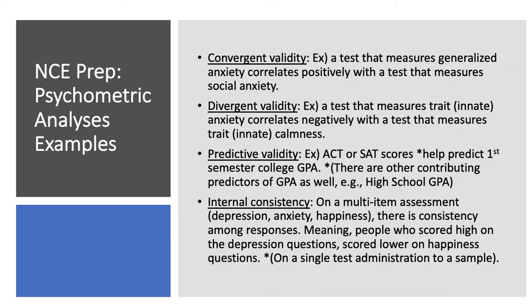Internal consistency is a reliability indicator, and what that's looking at is on a multi-item assessment measuring different domains such as depression, anxiety, and happiness — thinking of things such as an MMPI or a brief symptom checklist — although happiness not necessarily overtly rated, but you might also see psychopathy, psychosis, and other domains.